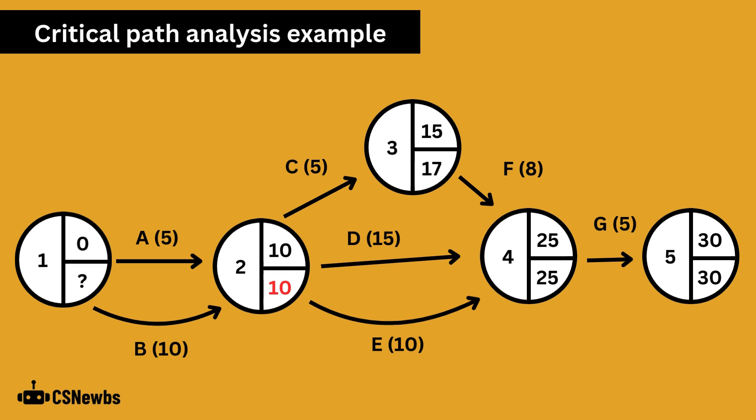The latest finish time of node 2 is 10. As from node 4, we take away the largest value, which is activity D's 15 days, so 25 take away 15 gives us 10.